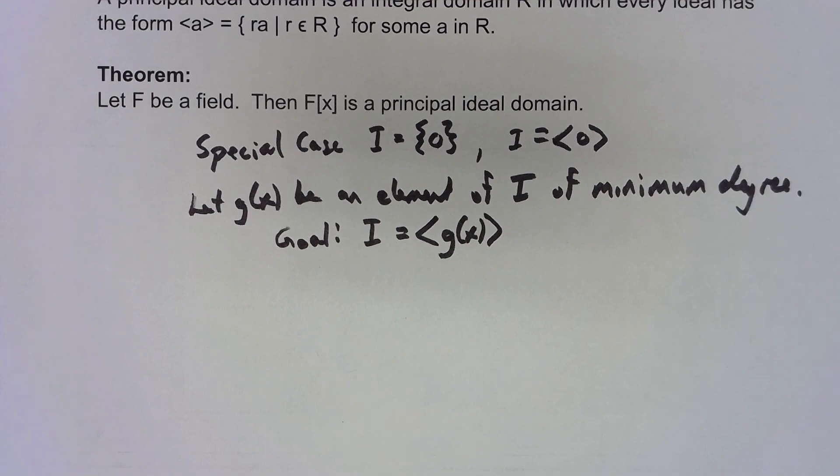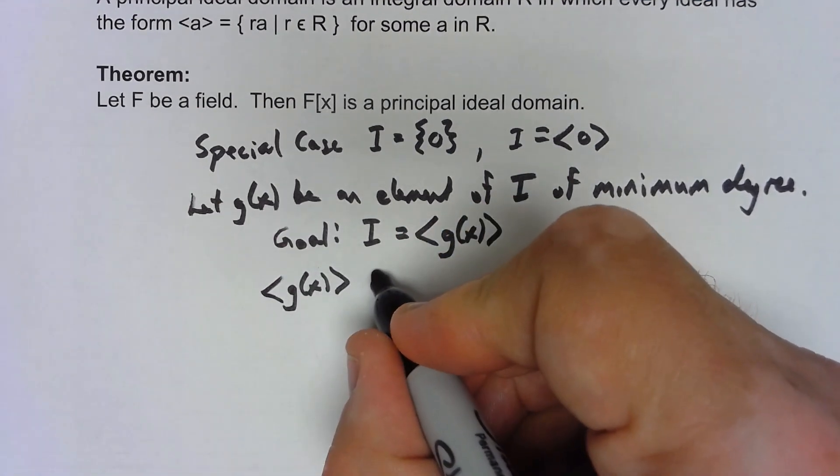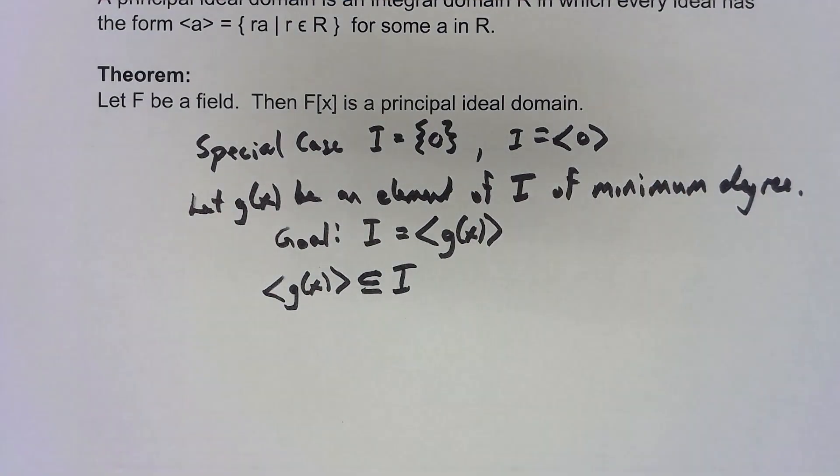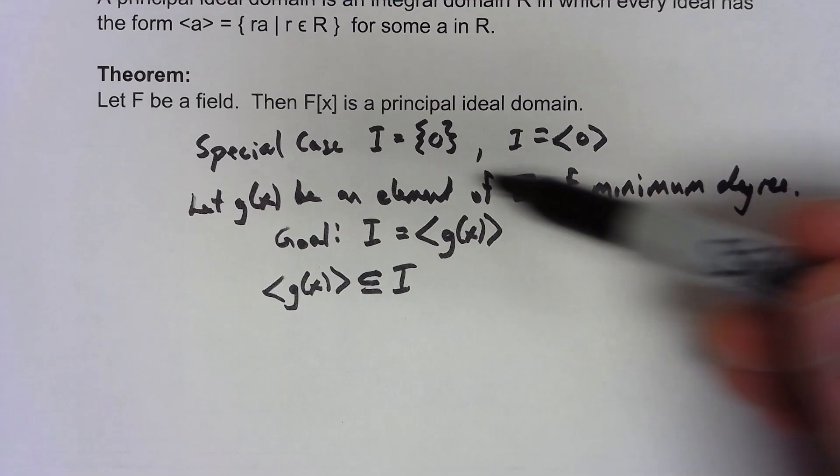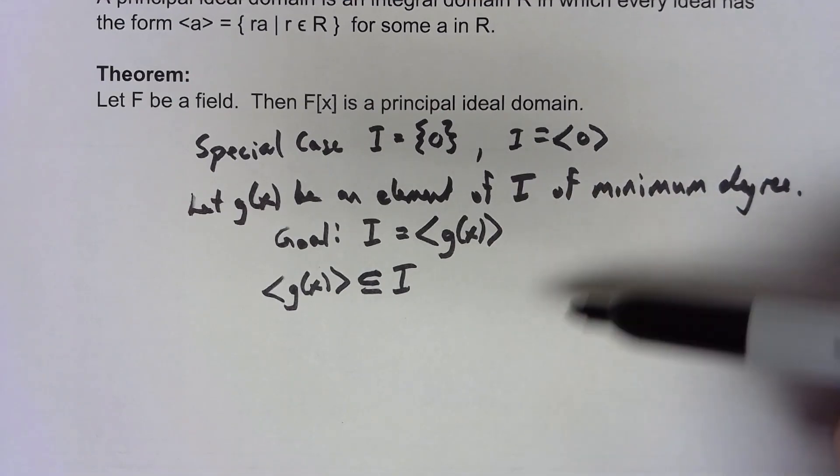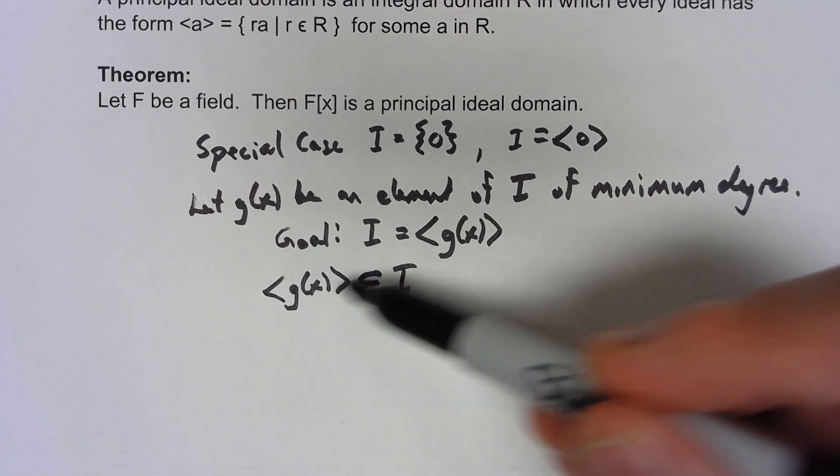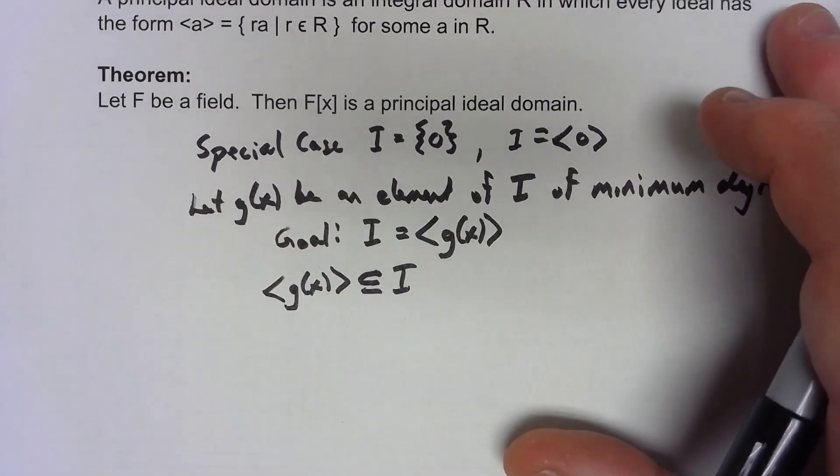Okay, well certainly the ideal generated by g(x) is a subset of the ideal I, because of course g(x) was in the ideal, so anything that we can create out of that has to be also in the ideal, just by the properties of what an ideal does.